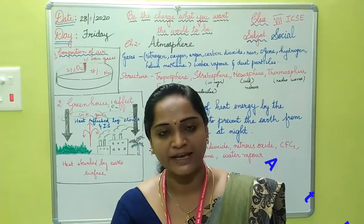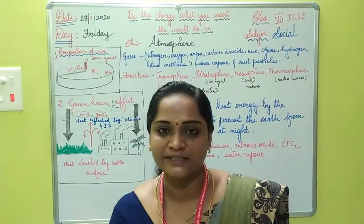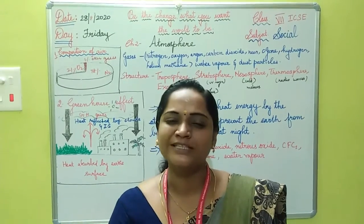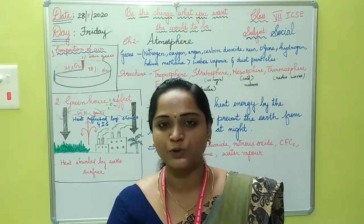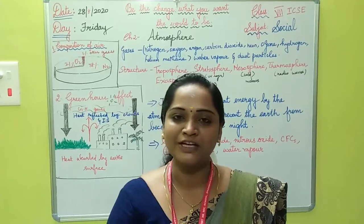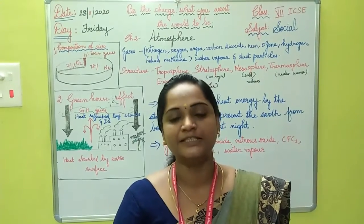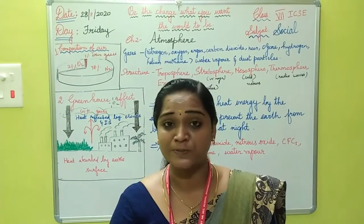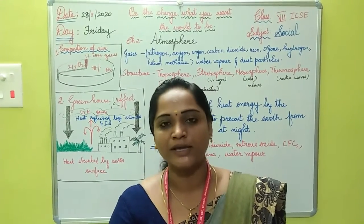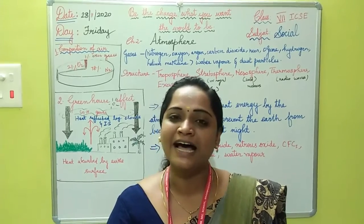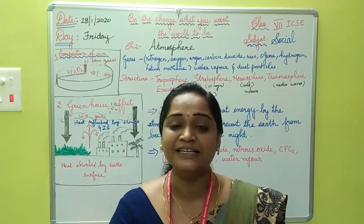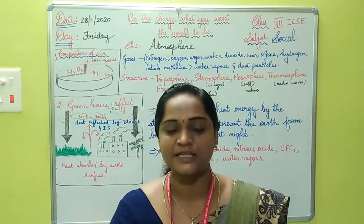The layer of air surrounding the earth is called the atmosphere. This is held due to the gravity of the earth. When compared to the earth, the atmosphere is a very thin layer. As the height increases, the density of the atmosphere decreases.